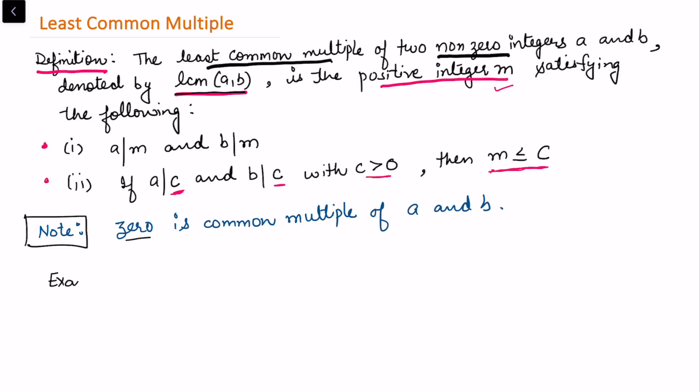Now considering an example for finding least common multiple, I choose two integers: let me take a equals minus 12 and let's consider b equals 30. So we know what are the common multiples to this: 60, 120, 180. I am talking about all the non-trivial multiples.